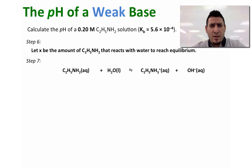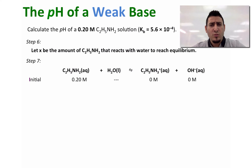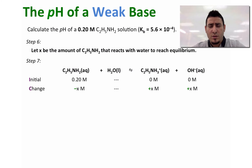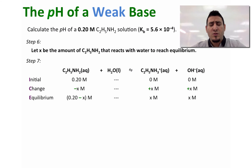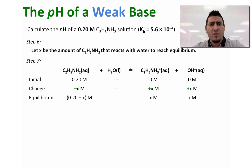In step seven, we write the equilibrium concentrations. Initially, we had 0.20 molar of the base and 0 molar of the conjugate acid and 0 molar of the OH⁻. After X molar of the base reacts with water, we will have X molar of the conjugate acid produced and X molar of OH⁻ produced. At equilibrium, we will have 0.20 minus X molar of the base, X molar of the conjugate acid C2H5NH3⁺, and X molar of the hydroxide.